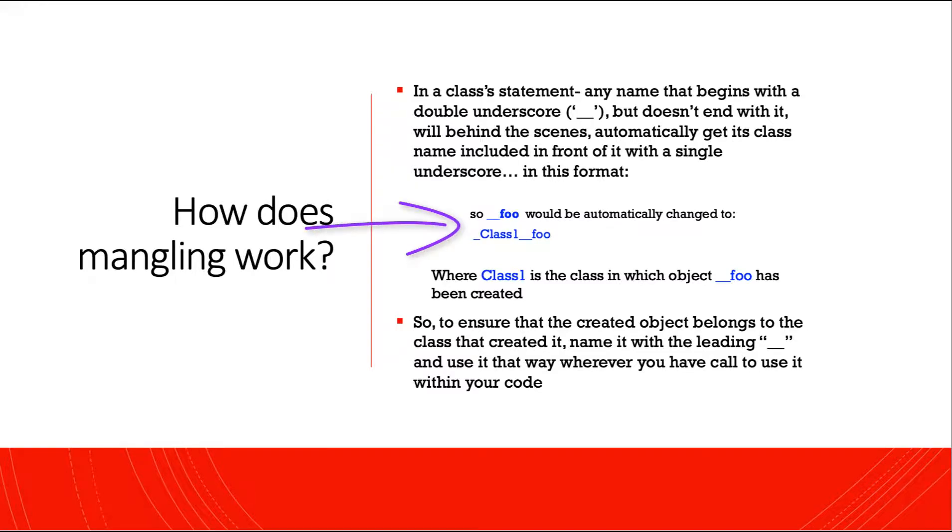So double underscore foo would be automatically changed to single underscore ClassOne double underscore foo, where ClassOne is the class in which object double underscore foo has been created. So it qualifies this variable, this attribute, with the fully qualified class name with a leading single underscore.